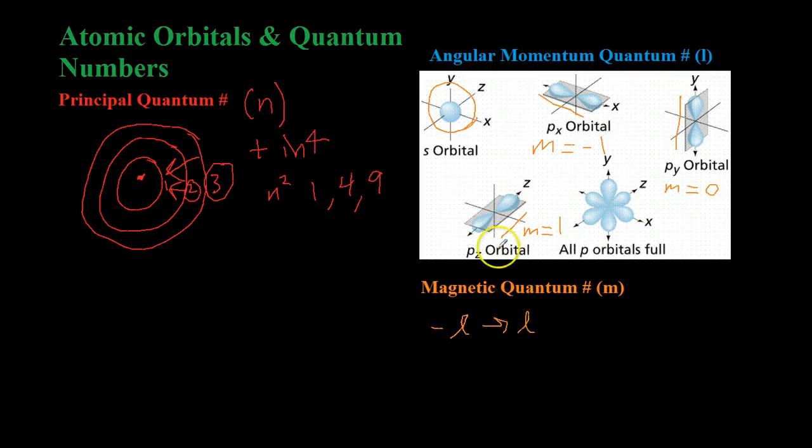So, for example, if you look at the P orbital, which is given by the value l equals one, then you can have m's that are negative one, zero, or one. Or if you were to go up to a D orbital, which is the next one above P, it has a value of l equals two, then you could have things from negative two, negative one, zero, all the way up through positive two.